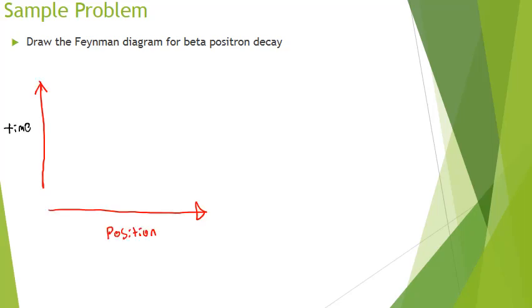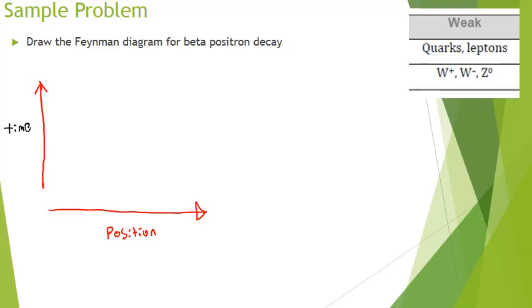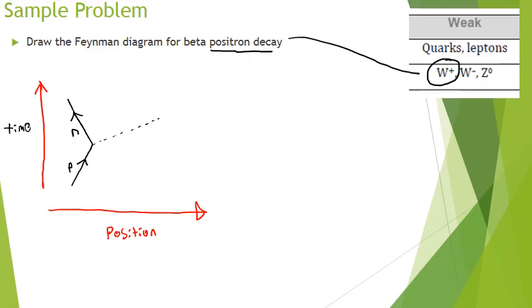In the beta positron decay solution, time goes vertically and position goes left to right. We have our quarks and leptons under the weak nuclear force. Here's our proton, and the proton becomes a neutron via the positive W boson. A positron is created — you start with plus one charge and must finish with plus one. A neutrino is also produced.